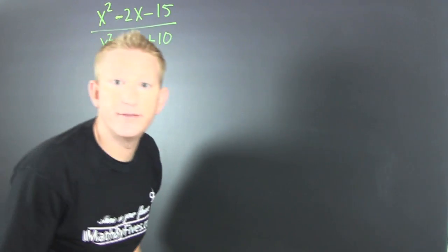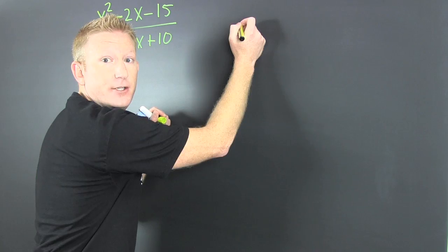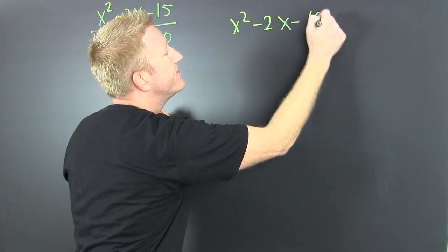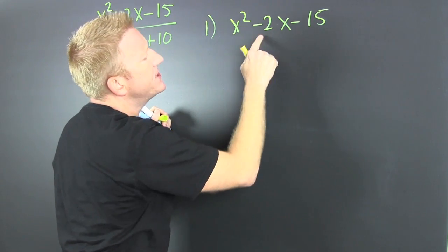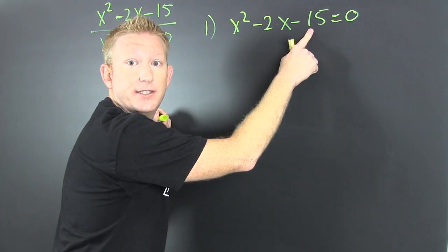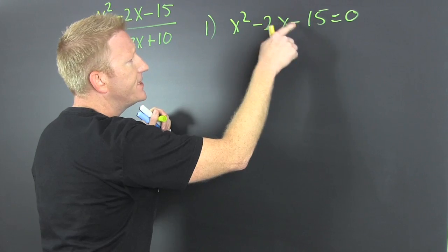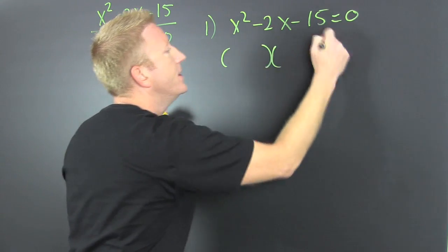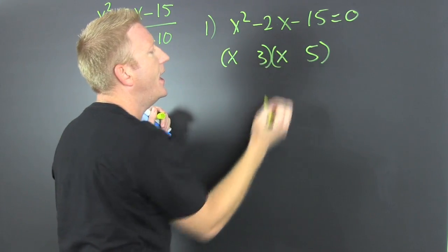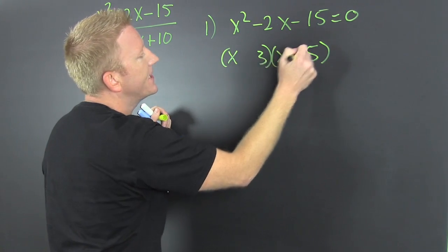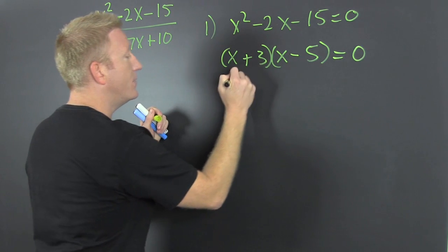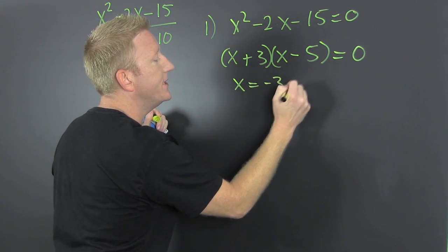Step one: zeros of the numerator. I take that numerator, x squared minus 2x minus 15, and I want to see where this is equal to zero. I got to factor — the factors of 15 that subtract to be 2. You got to get that 5 and 3: (x + 3)(x - 5) = 0. The signs are different and the big one is negative. So my zeros are gonna be at minus 3 and 5.